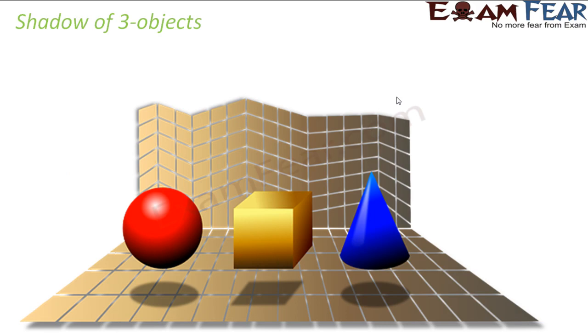Now when you look at what happens when you see the shadow of a three-dimensional object, that is also very interesting. Now here on the screen you see three objects. One is a sphere, so the first one is a sphere.